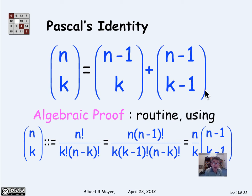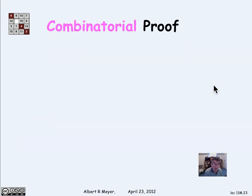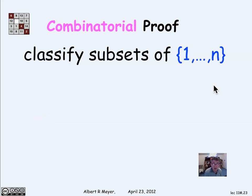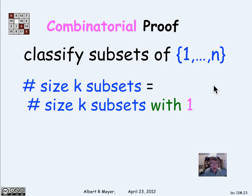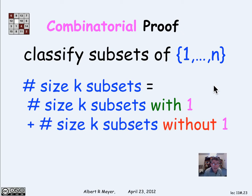I'm interested in another way of proving an equation like this that is based on a counting argument. And here's the argument. Let's consider the subsets of 1 through n. And let's classify them into two groups, the size k subsets that have a 1 and the size k subsets that don't have a 1.